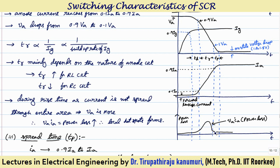The power loss is huge during rise time, and because of this huge power loss there is a significant temperature rise, which can cause formation of local hotspots in the areas where the current is passing. This is a major problem. Rise time is inversely proportional to the gate current — more gate current means lesser rise time — and it is also inversely proportional to the build-up rate of the gate current.